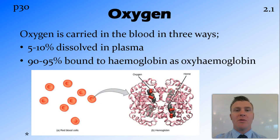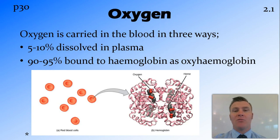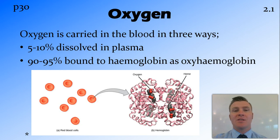Oxygen can also be found dissolved in the plasma. However, this isn't a very efficient way to move oxygen around the body. Most animals have hemoglobin on their red blood cells, and the oxygen is able to bind to this hemoglobin to create the compound oxyhemoglobin. This actually gives the efficiency of carrying oxygen about a 70 times boost.